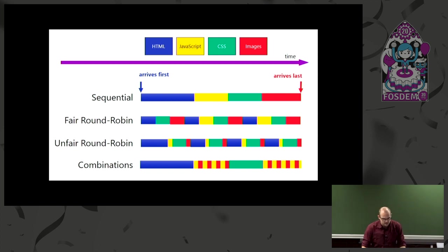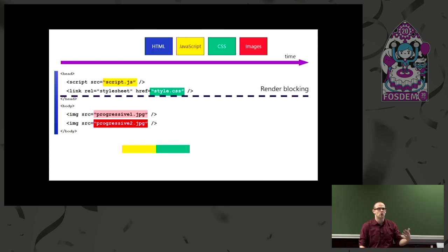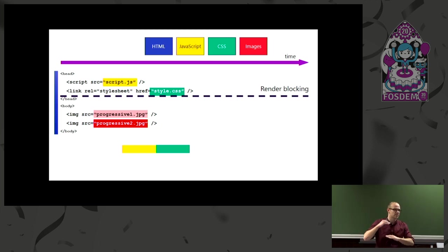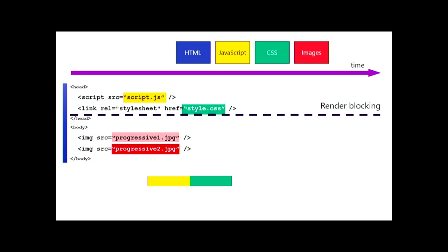Let's try to deduce that by using a very simple example. So in this webpage, the two top ones — JavaScript and CSS — we can say that they are render-blocking. This means that they have to be downloaded in full and executed before you can actually render the rest of the HTML page. That means it makes sense that we fetch them first, sequentially, back to back. Now the next two resources are progressive JPEGs.